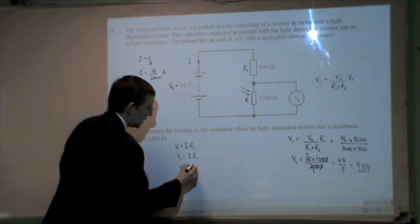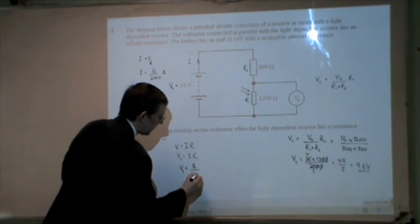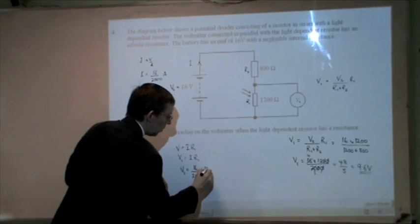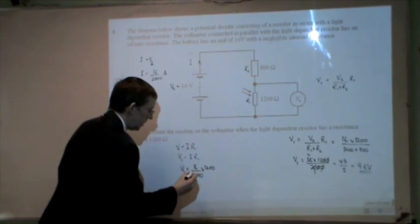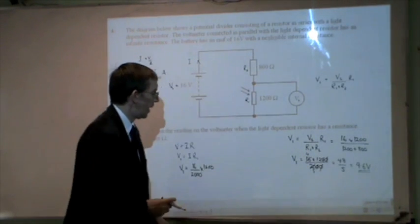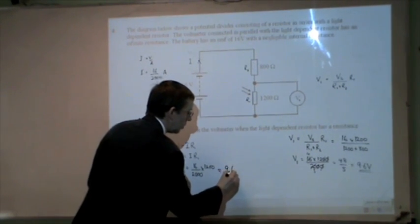So I can now put that back in here to get V1 equals, well, I is this, 16 divided by 2000 multiplied by R1. Well, R1 is 1200, and that is the same as the sum I arrived at there. So I know that that equals 9.6 volts.